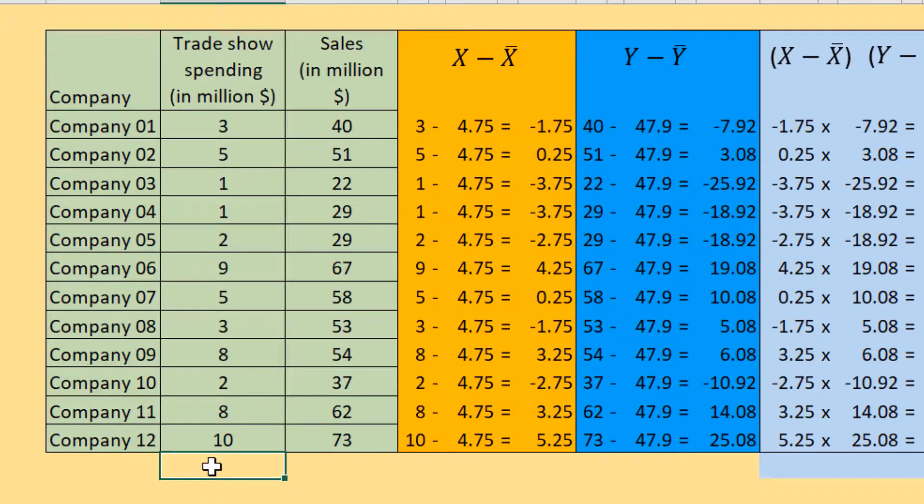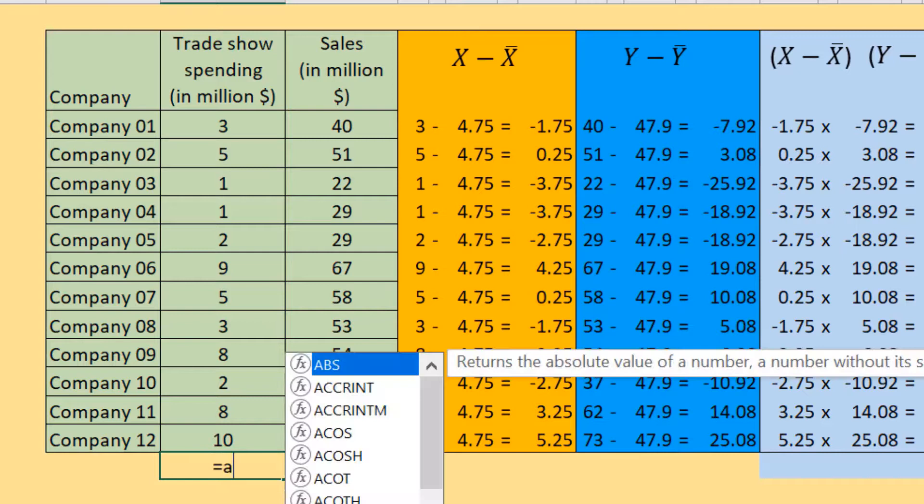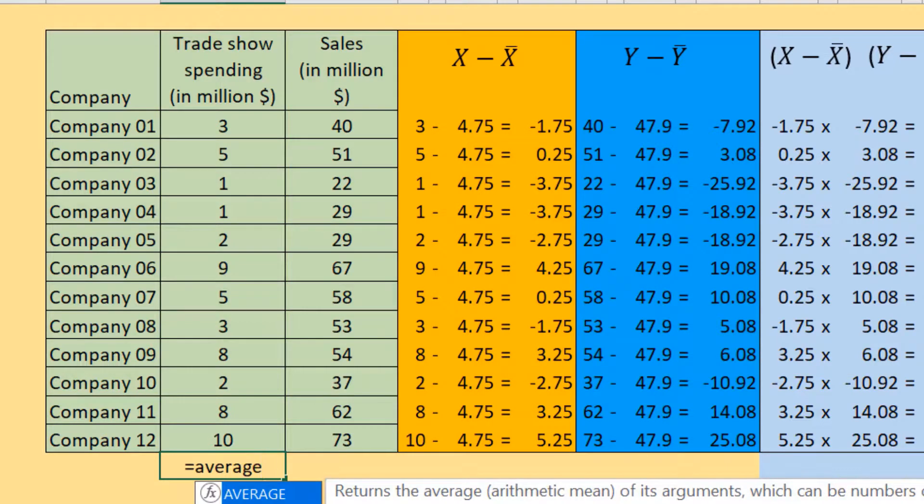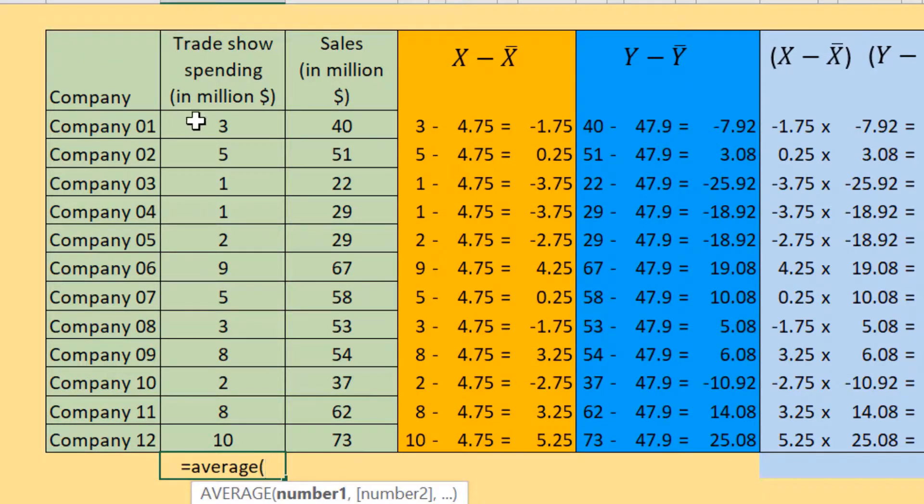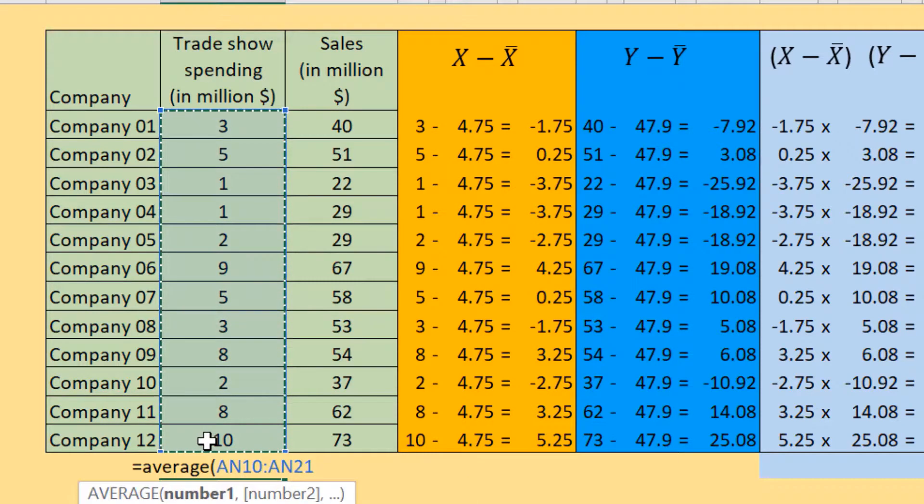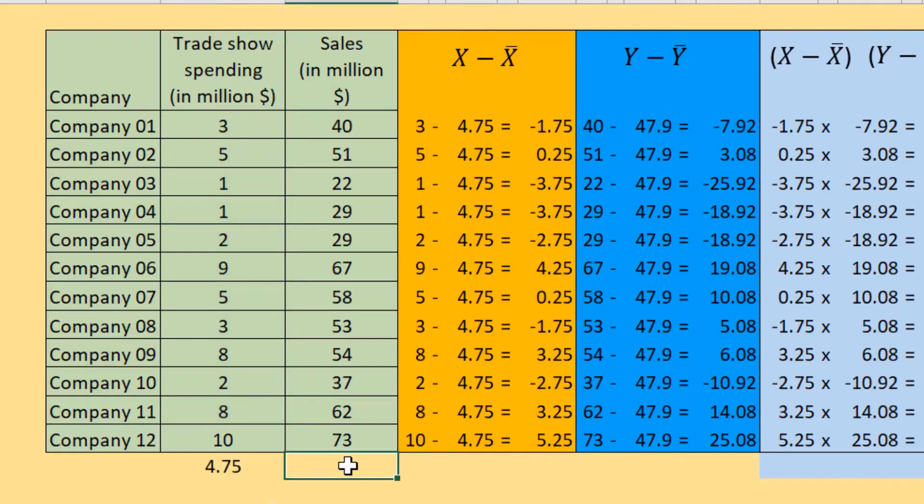We can compute the mean of x using Excel function. Type equal, then average function, open parenthesis, then choose values of x, then close parenthesis. The result is 4.75. Do the same with y values. The mean of y is 47.92.